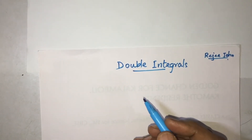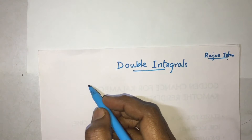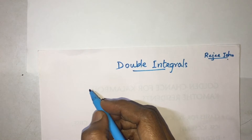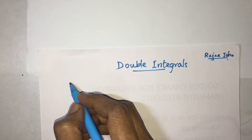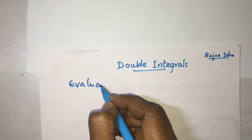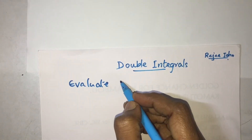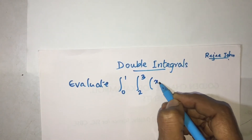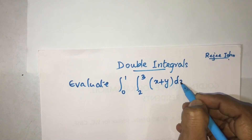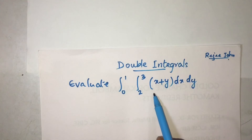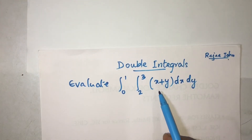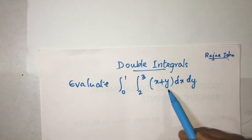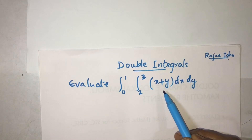Dear students, let's see how to find double integrals. We use double integrals when the integrand consists of two variables. For example, if you want to evaluate integral 0 to 1, integral 2 to 3, of x plus y, dx dy — here this integrand consists of two variables, x and y. So here we use double integrals. When the integrand has only one variable, we use a single integral.